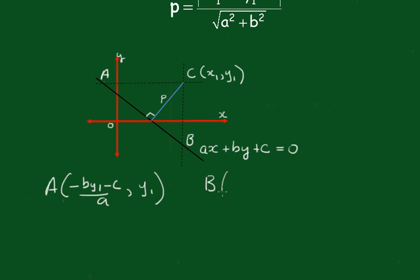And the coordinates of B, I'm substituting now the x1 into here and rearranging, we get that the y is minus ax1 minus c all over b.